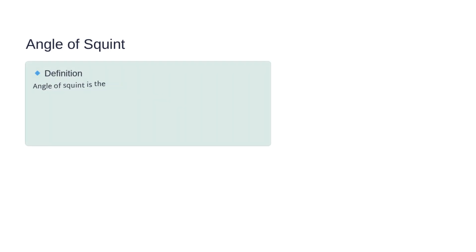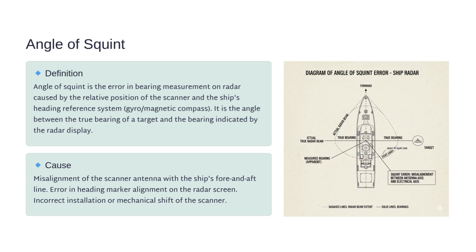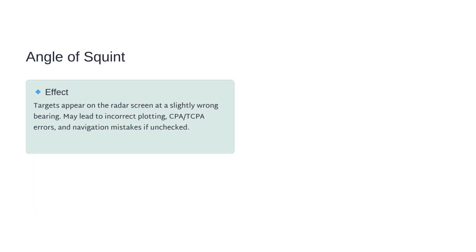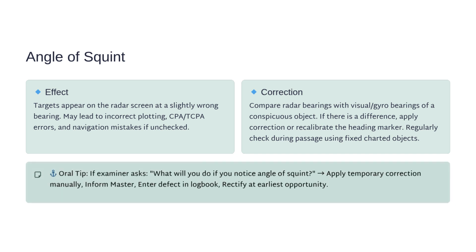Our final topic is the angle of squint — an error in radar bearing measurement caused by misalignment between the scanner and the ship's heading reference. It happens when the radar antenna is not properly aligned with the ship's fore and aft line, or if the heading marker on the screen is off. The effect: targets appear at slightly wrong bearings, which can lead to plotting errors, wrong CPA or TCPA readings, and even navigation mistakes. To correct it, compare radar bearings with visual or gyro bearings of a fixed object. If there's a difference, apply a correction or recalibrate the heading marker, and always keep checking alignment during passage. Oral tip: If you notice an angle of squint, apply a temporary correction manually, inform the master, record it in the logbook, and arrange for repair as soon as possible.